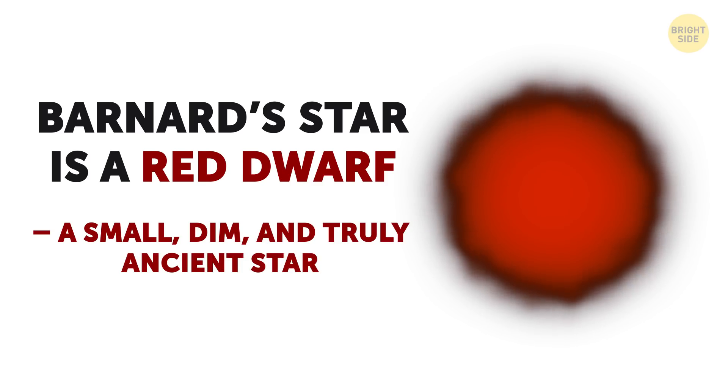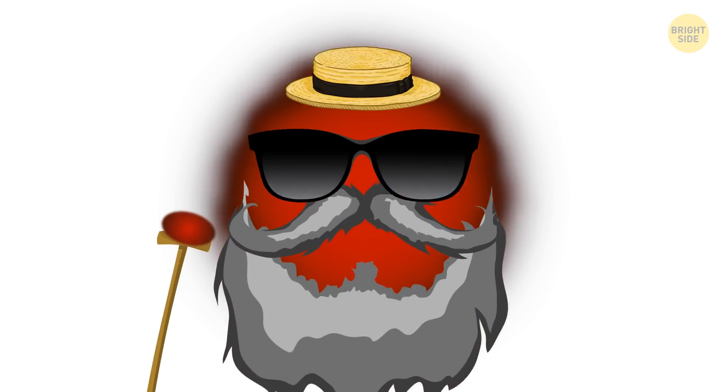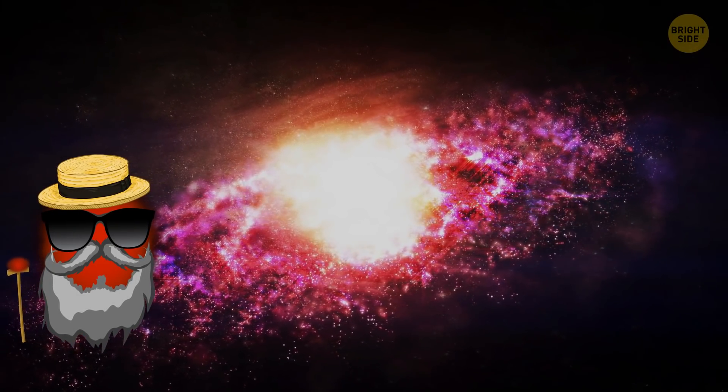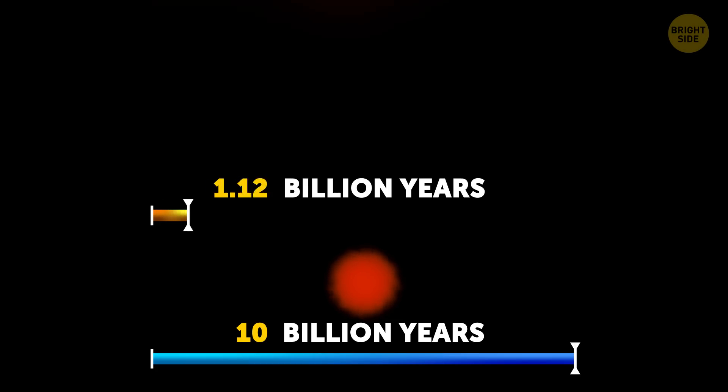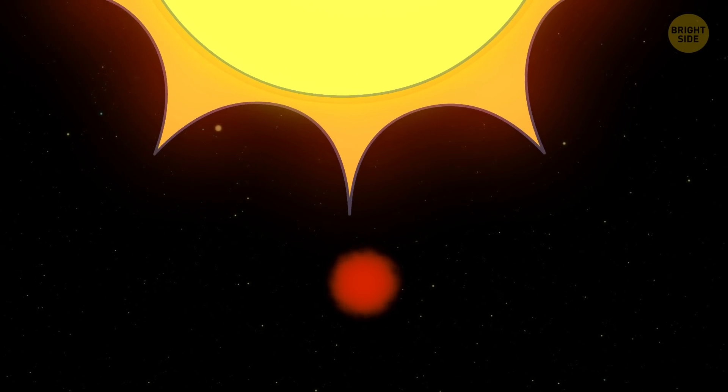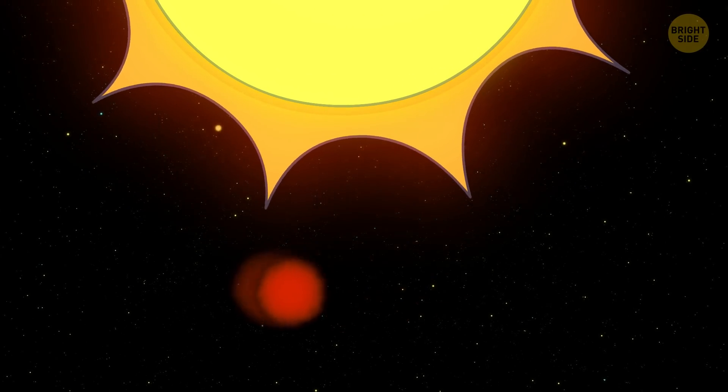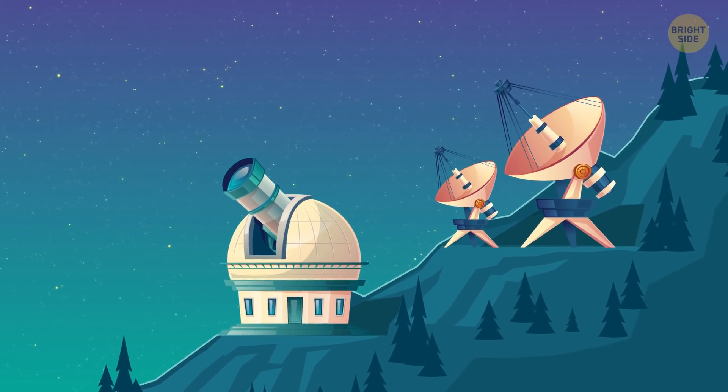Barnard Star is what astronomers call a red dwarf—a small, dim, and truly ancient star that's getting pretty close to the end of its life cycle. And yes, Barnard Star fits the bill of a red dwarf. It's so ancient that it probably saw the birth of the Milky Way galaxy itself. At around 10 billion years old, it's easily twice as old as our own sun. For something normally as bright and heavy as a star, being small, dim, and super fast is pretty remarkable.